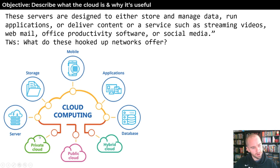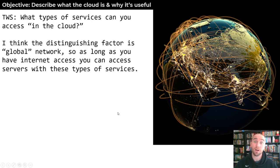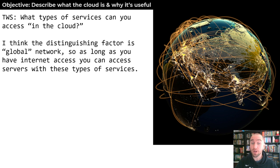Cloud computing has delivery methods: you can have a private, public, hybrid, or community cloud. The services these clouds offer could be anywhere from offering multiple servers for storage, like video storage, mobile applications, and databases. You could have a database of your clients out there on the cloud, which might be very useful depending on your company. The distinguishing factor is a global network — as long as you have internet access, you should be able to access these servers and their types of services. The whole idea of redundancy and on-demand are really big.